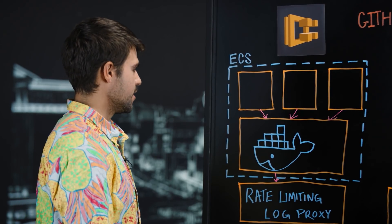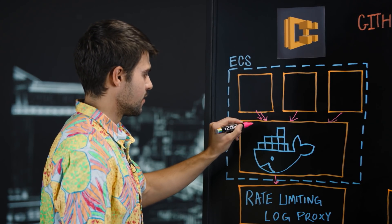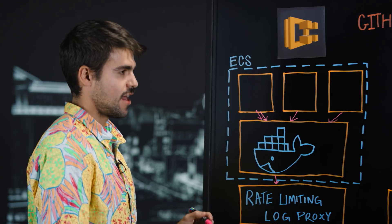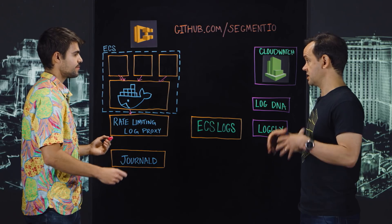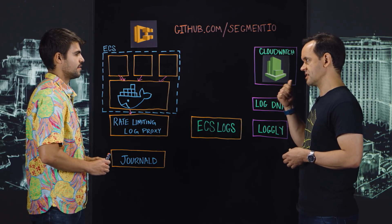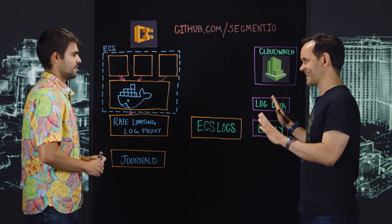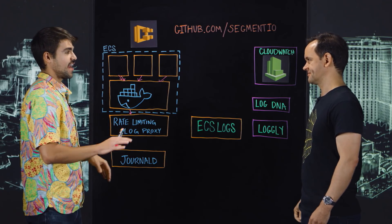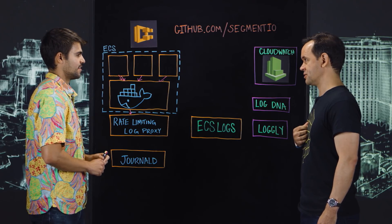So if one container is badly behaved and starts sending a bunch of lines, the proxy will start limiting it and say: I'm beginning to drop log lines because you're logging too much. As a developer or platform operator you get to see that this container is behaving badly, but it doesn't take out all the other containers on the instance. It gives you both visibility and isolation.